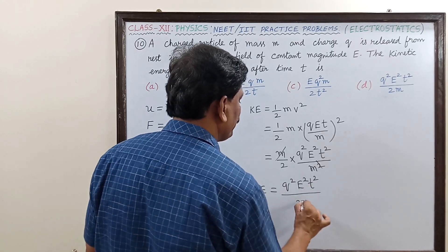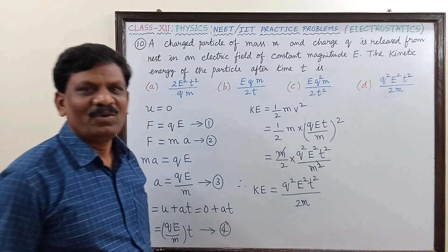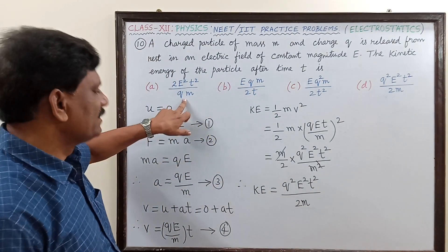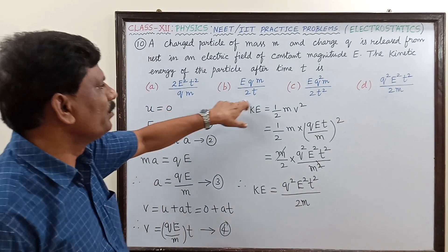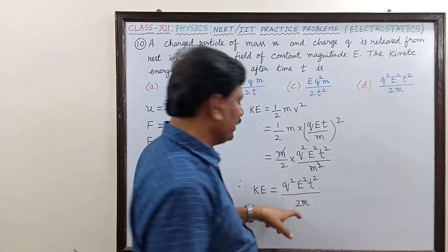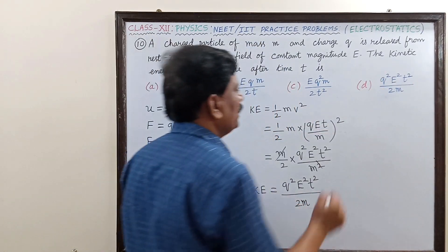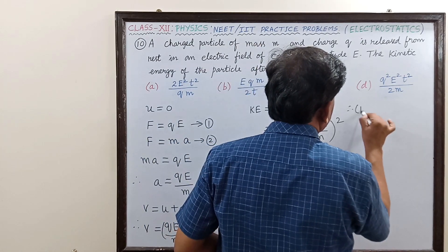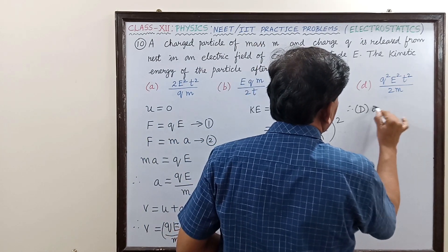The denominator should be 2m. So q squared E squared t squared by 2m. Therefore, option D is the correct answer. I hope you understood.